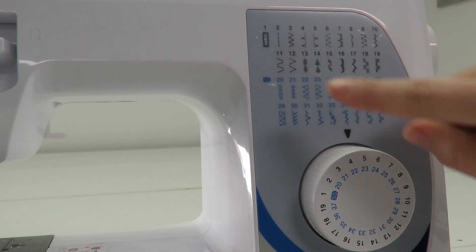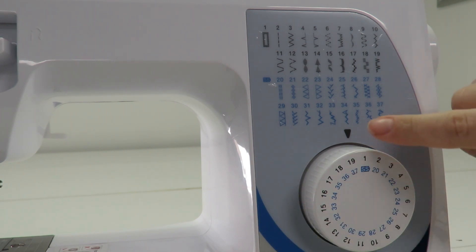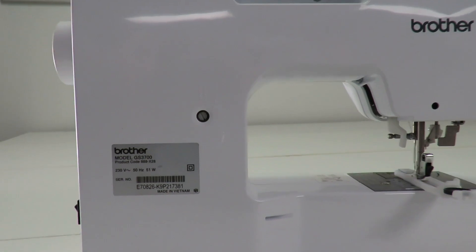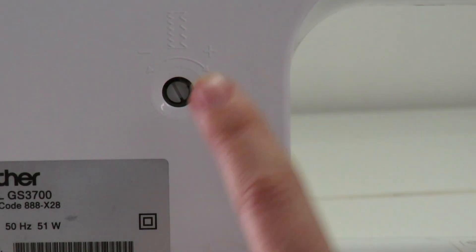...buttonhole stitch by turning the dial to the corresponding number 1. At the back of the GS 3700, there is a screw to help adjust the right leg of the buttonhole.